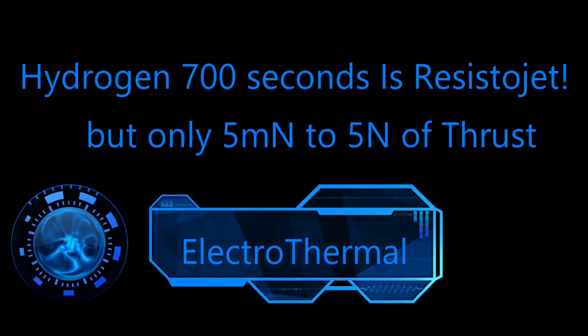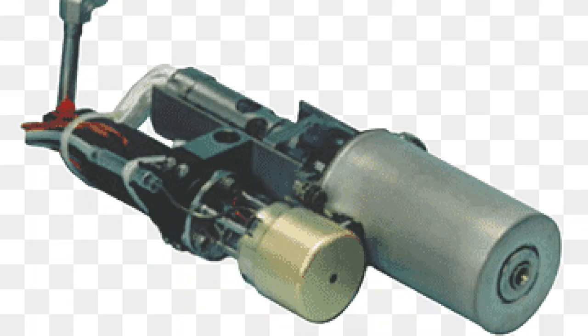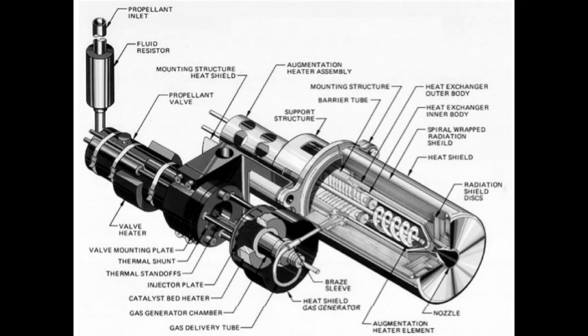Some engines use monopropellant hydrazine over a catalyst to produce hydrogen and nitrogen gas and then run those through a resistojet to increase the efficiency of the engine.